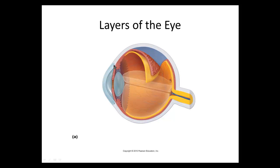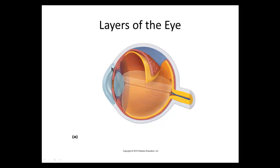In the front of the sclera, it becomes transparent and is modified to form another structure called the cornea. The cornea is a very sensitive part of the eye — if you touch it, it will cause blinking and tearing because of all the sensory receptors there. It's the transparent, modified area of the sclera that allows light to pass through the front of the eye.